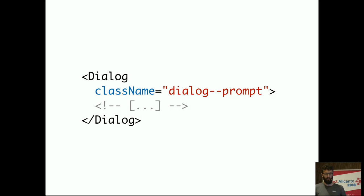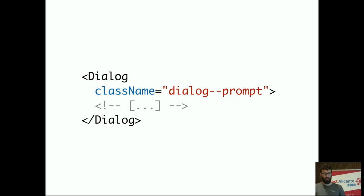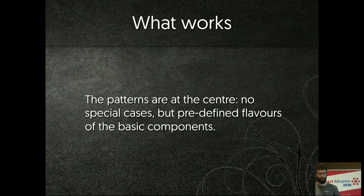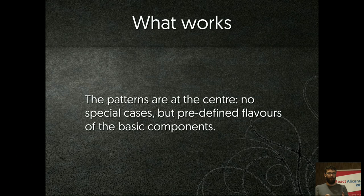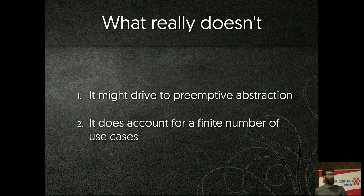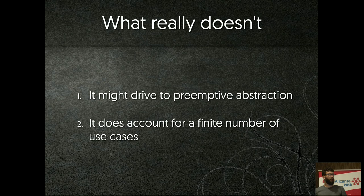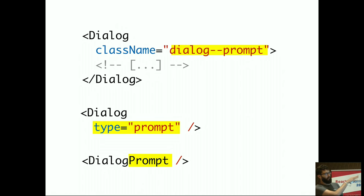Specialized patterns are what proper modifiers in BEM are for — probably the easiest way to deal with this. It goes back to thinking ahead and planning more. You have a generic class, and semantically this is very different from ad hoc modifiers because it's a reusable modifier. You bring the design patterns back to the center of your development — you're not creating a special case, but predefined flavors of your basic components. The only problem is it could drive preemptive abstraction. You could start seeing patterns where there aren't any, creating variants used maybe once and then they die. It's also quite limited — in a React world you'd probably go for something along these lines rather than className injection.